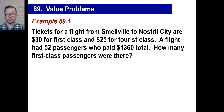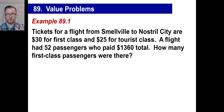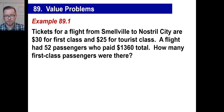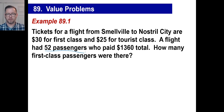Let's break this down and visualize it. We've got tickets to a flight — there are two types: first class and tourist class. The flight has 52 passengers total — first class and tourist class together. They paid $1,360 total for the flight. This is exactly the same thing as a coin problem. So we have 52 passengers as our first equation.